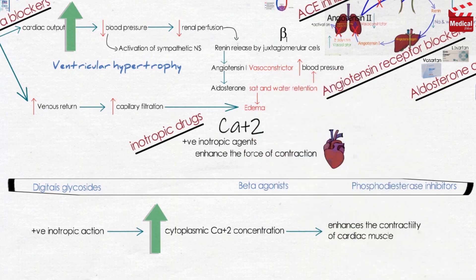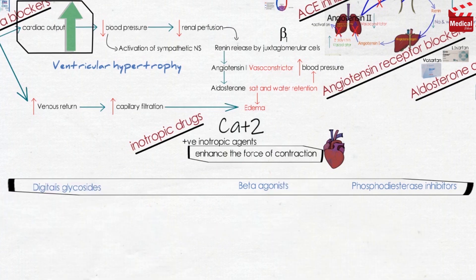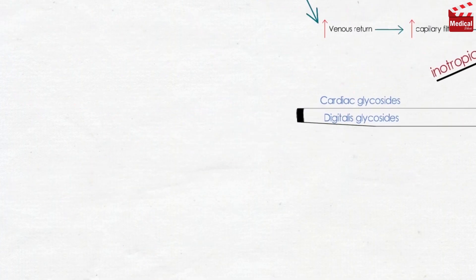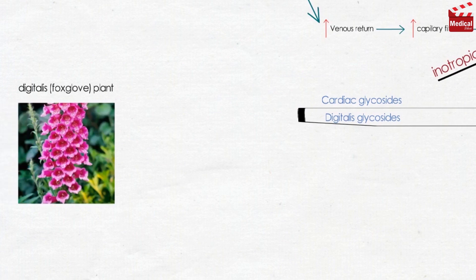When calcium concentration increases, force of contraction increases and cardiac output increases, which we need to manage heart failure. The first group in this category is cardiac glycosides, also known as digitalis glycosides. They are a group of chemically similar compounds that come from the digitalis plant, also known as foxglove. The most widely used agent is digoxin.